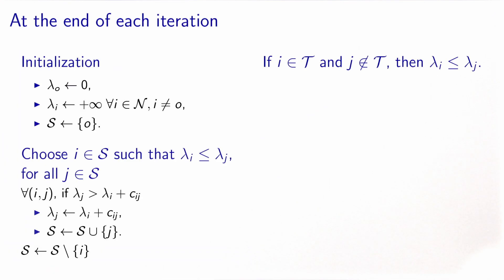Let's introduce some properties of the algorithm that hold at the end of each iteration. The first property says that if a node is in T, its label will be less or equal to the label of any node which is not in T. And we will show this by induction.